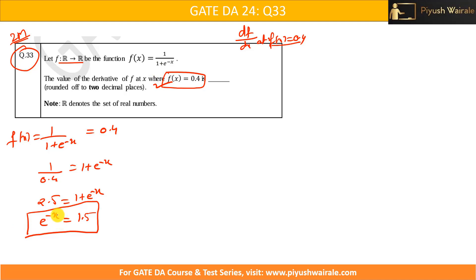We could also calculate the value of x using log properties, but we don't need to do that. We can directly use the value e^(-x) = 1.5 in the derivative to get the answer. Finding x would take longer and make the calculation more complex. In gate exams, just find e^(-x) first and determine if finding x is really necessary.